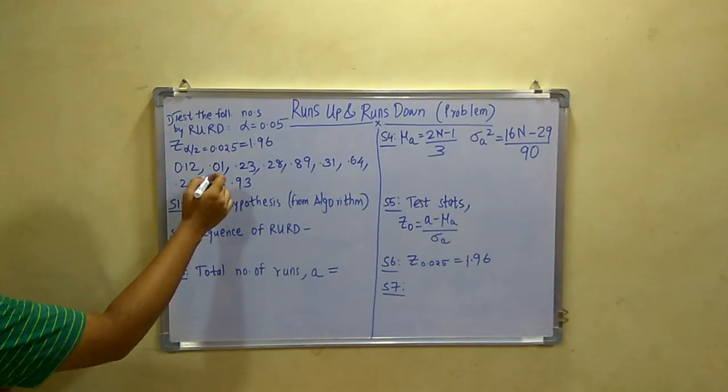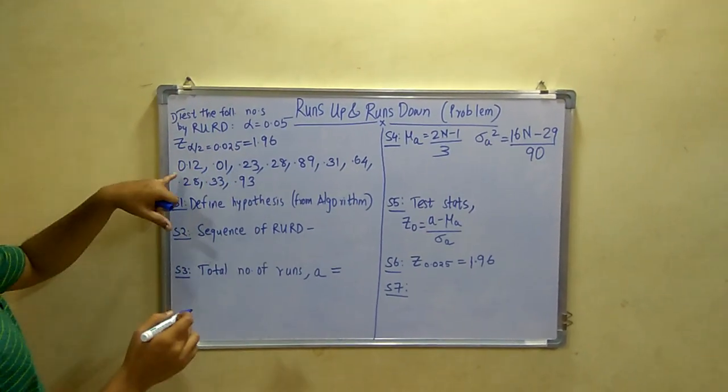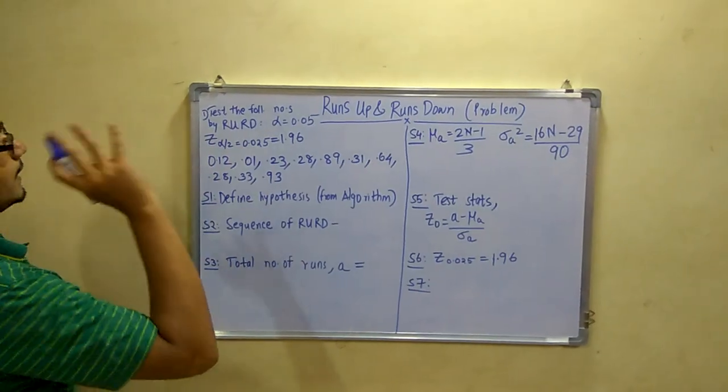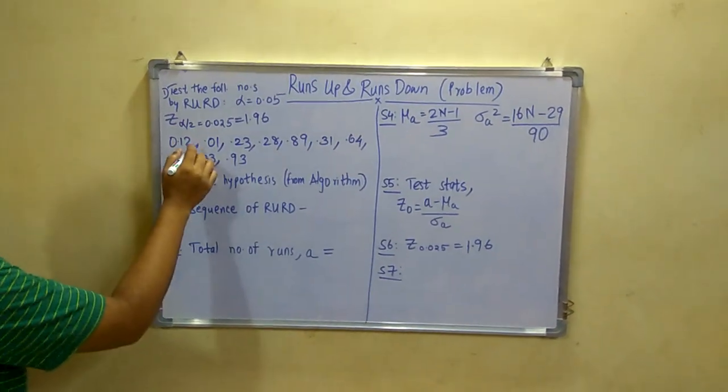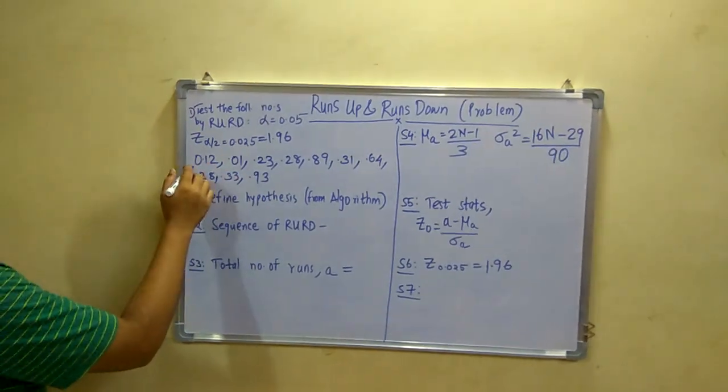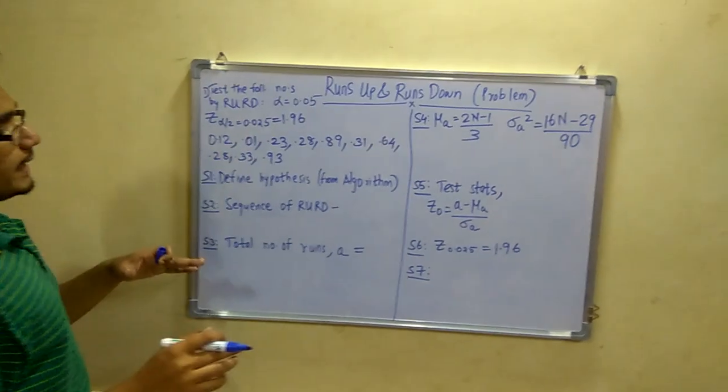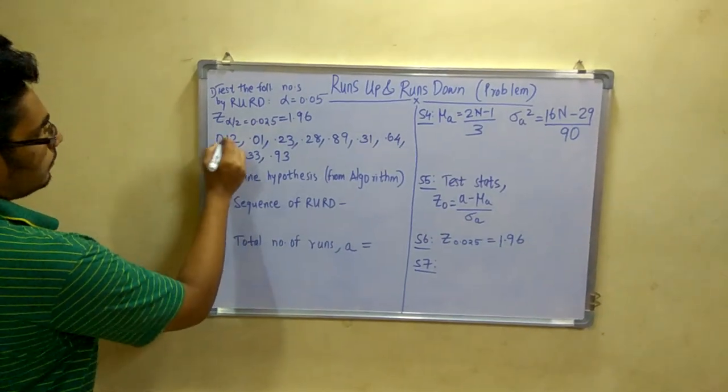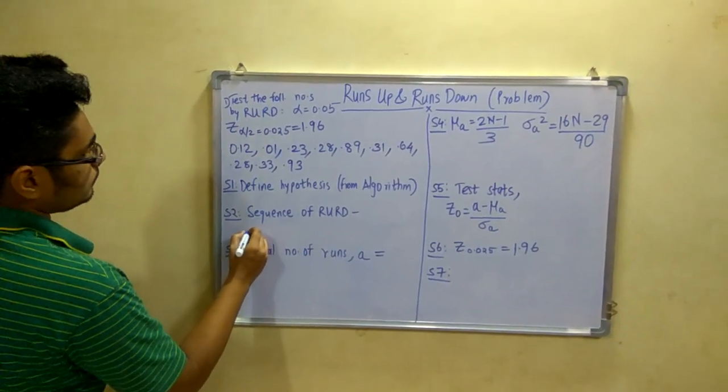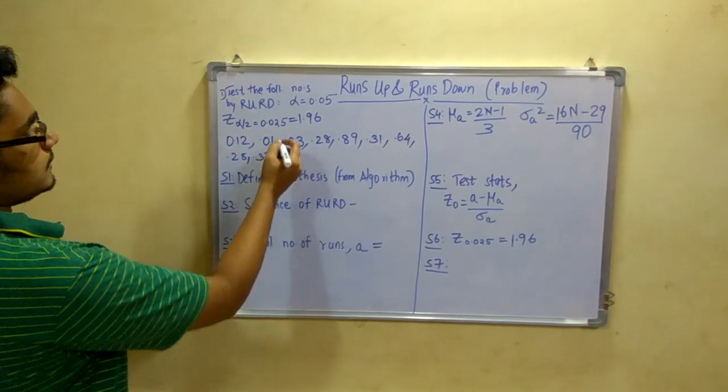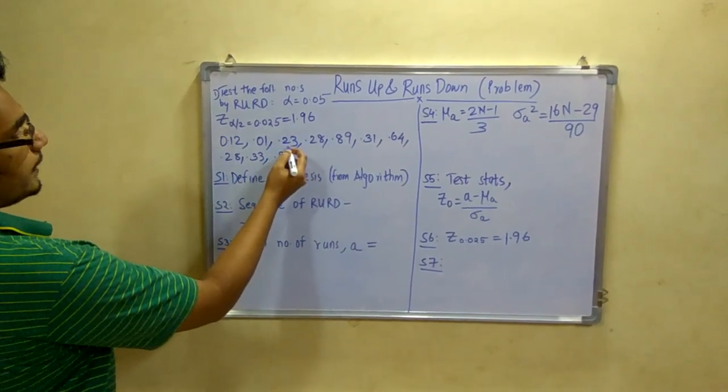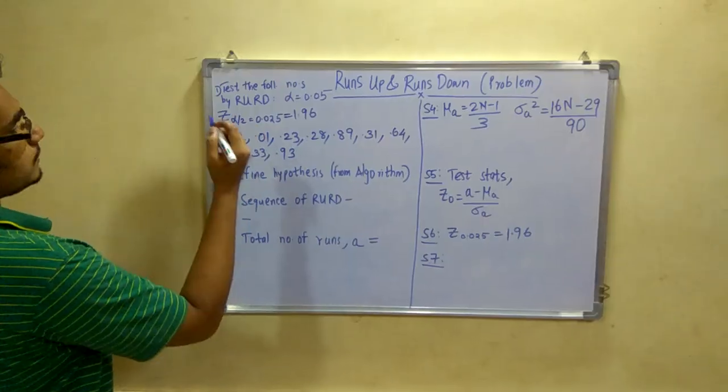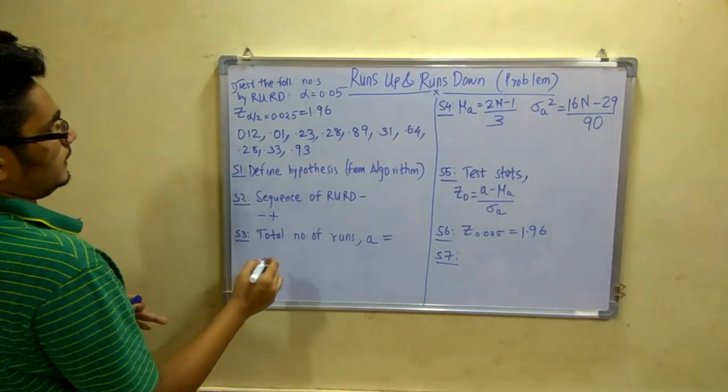Now remember this 0.01 is very much less than 0.12. In your mind you can do the calculation like 0.01 minus 0.12 which leads to a negative value. So you will write a minus next to 0.12. Next you will subtract 0.23 from 0.01 which is positive, so a plus sign.